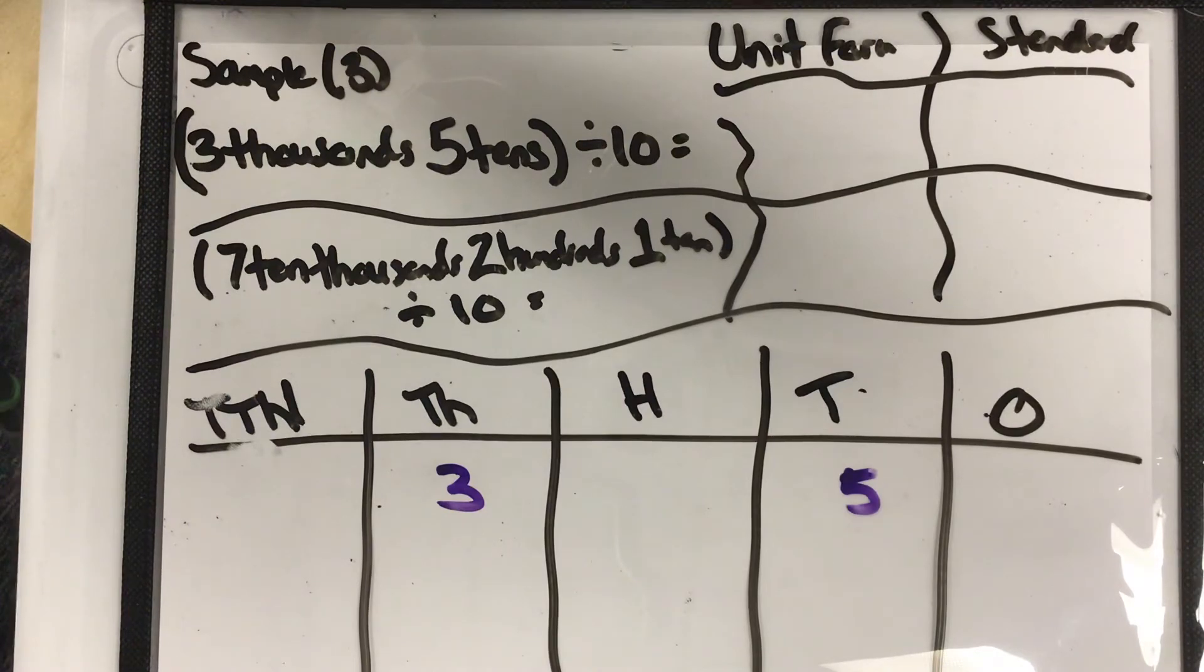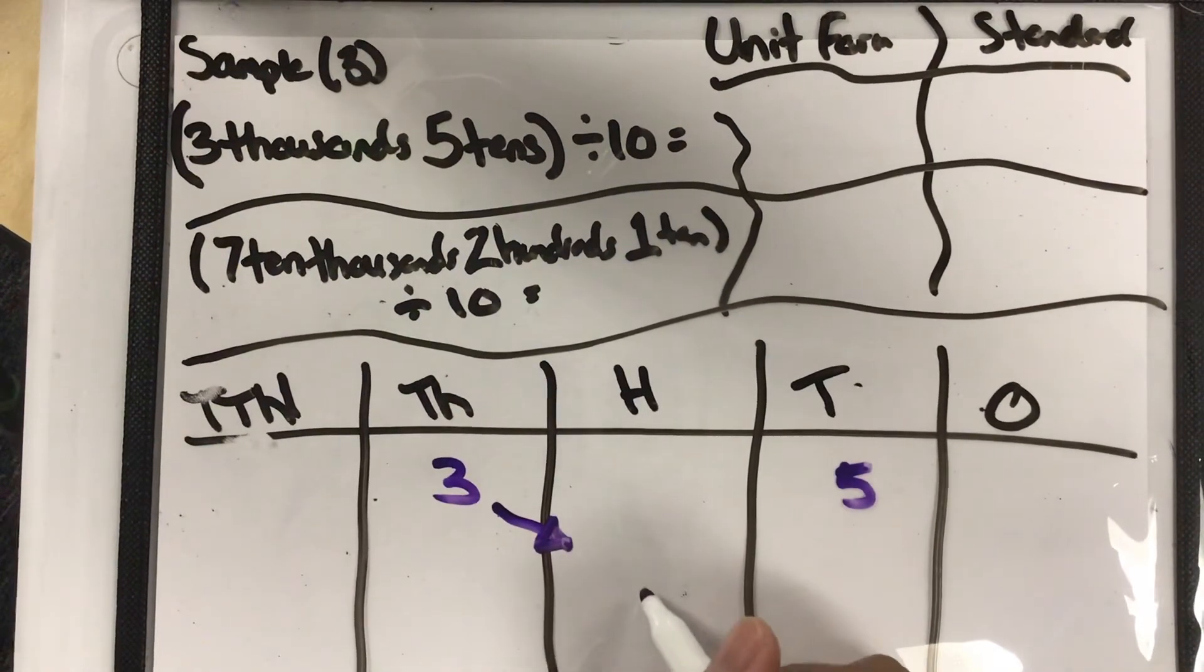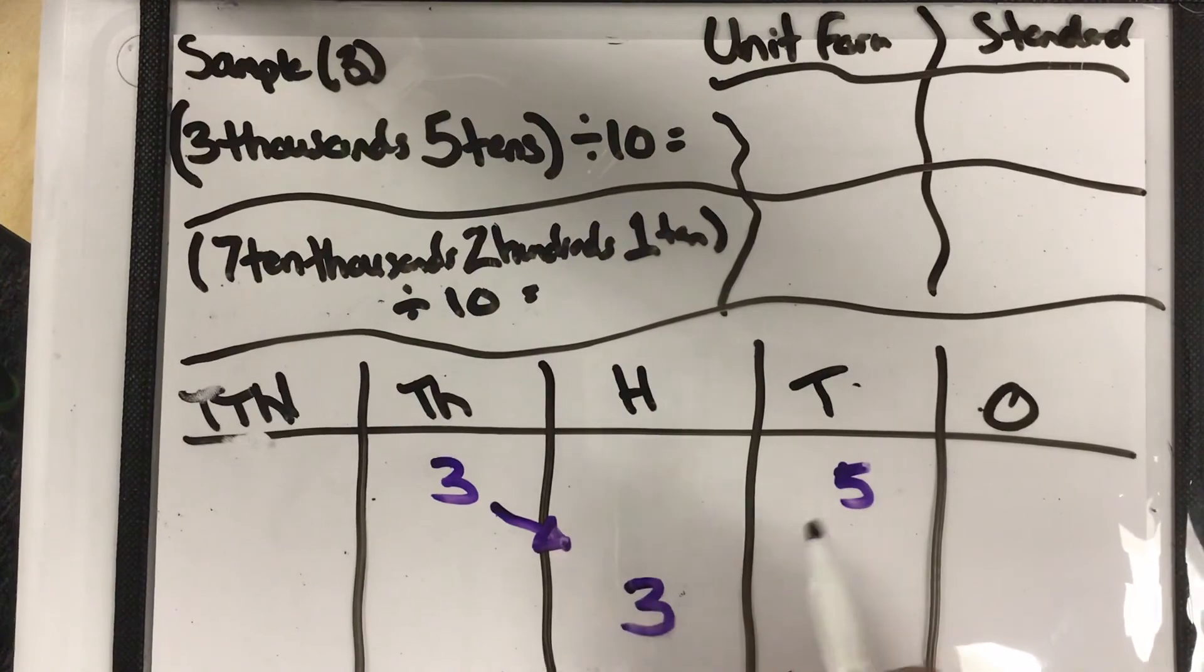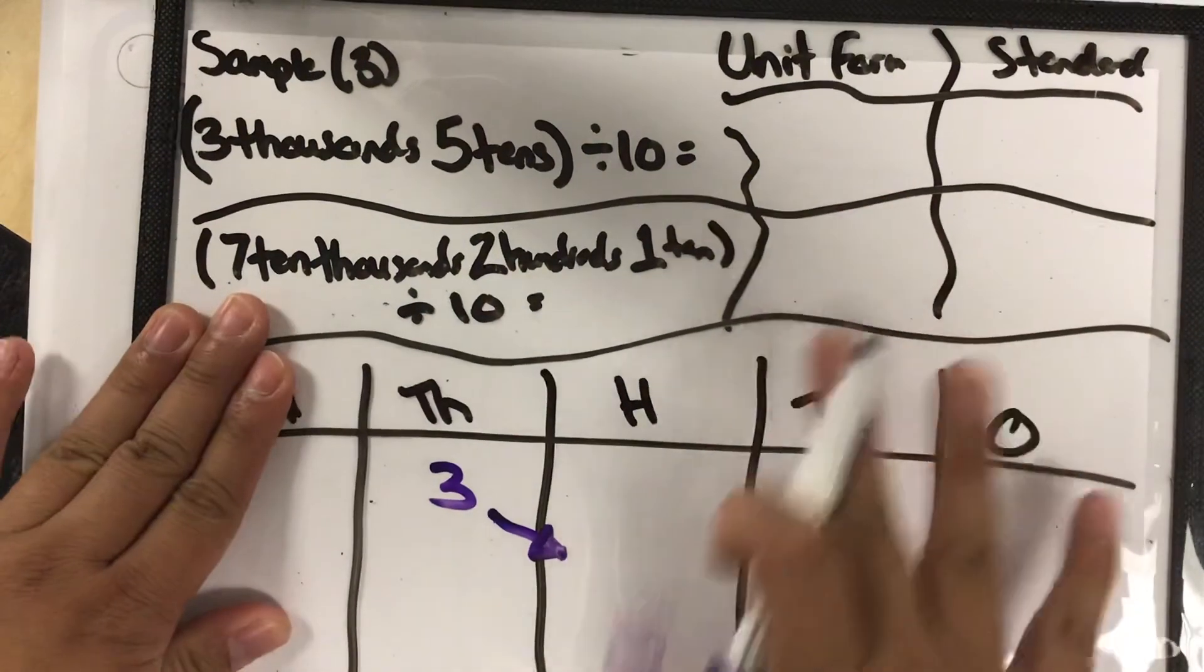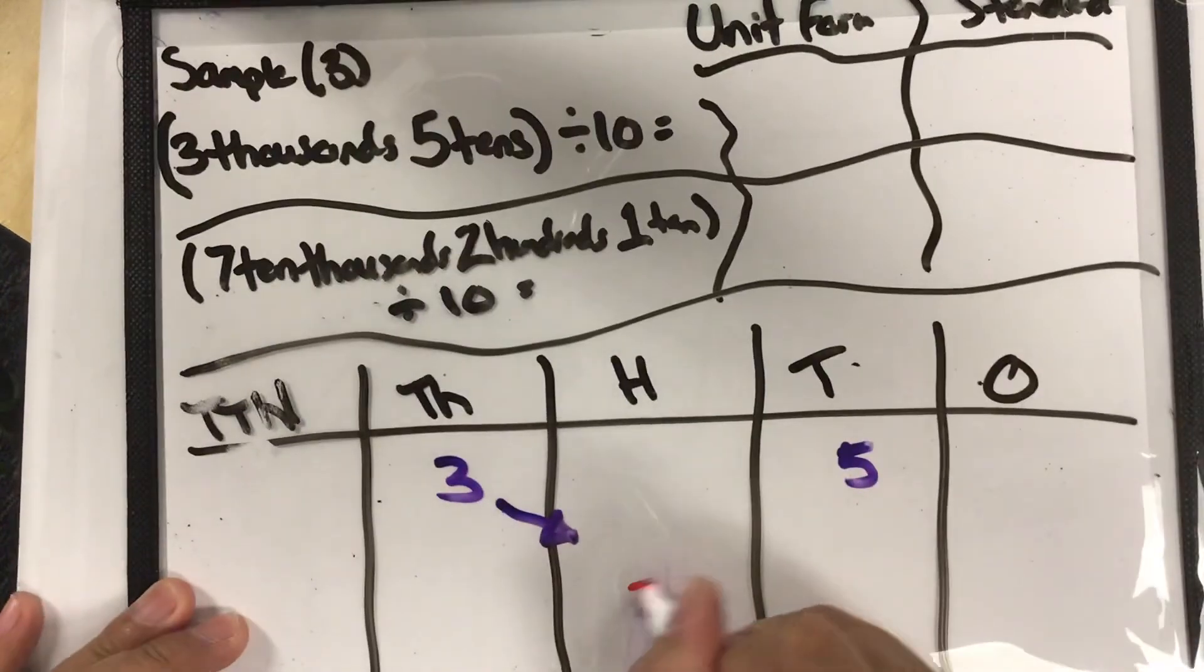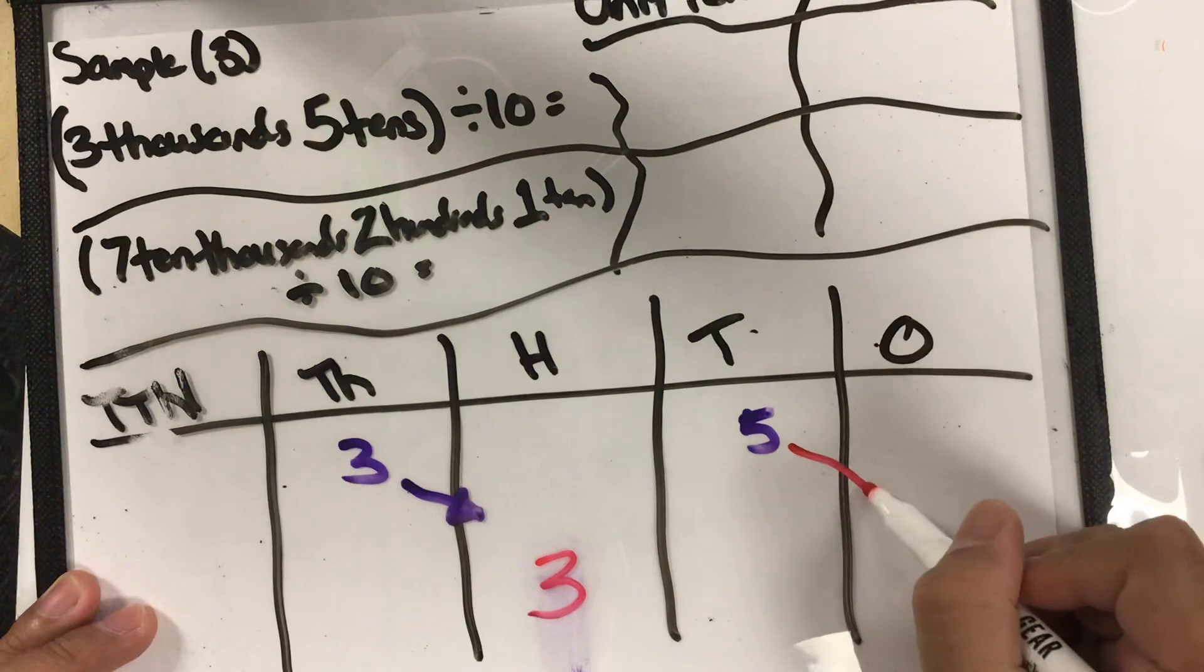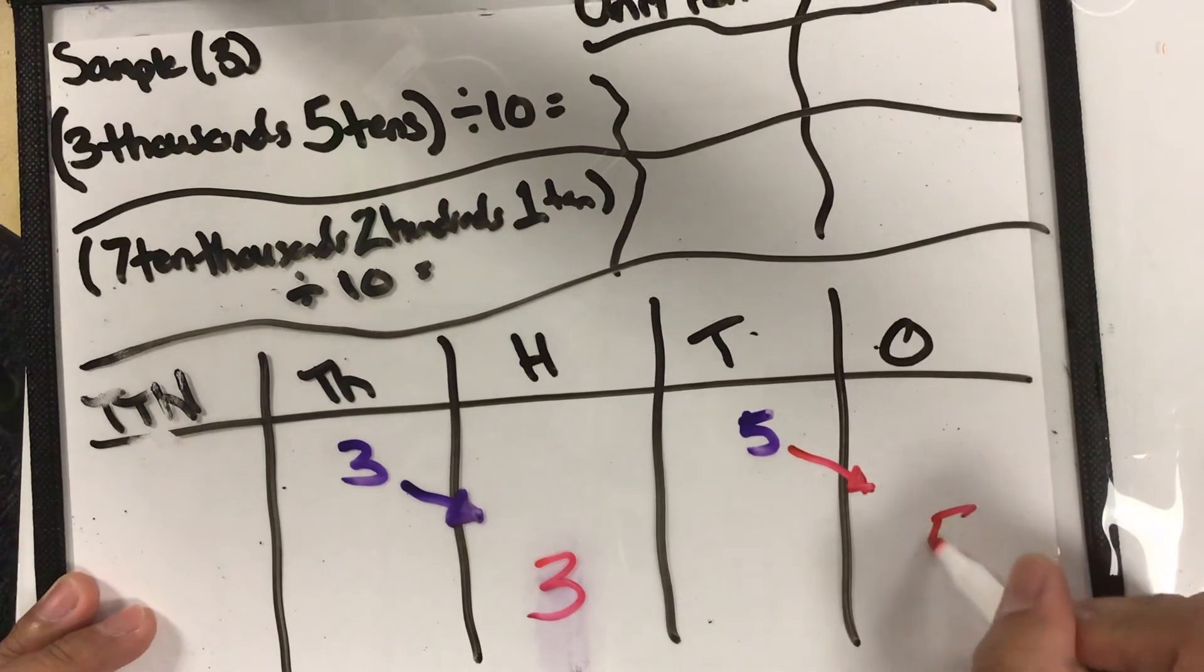Well, I hope you're thinking that they go to the right because we are dividing. So three thousands would become three hundreds. Oh, hold on, let me do different color. Three thousands will become three hundreds. Five tens will become five ones.